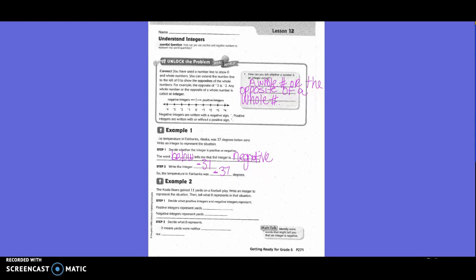Example 2. The koala bear gained 11 yards on a football play. Write an integer to represent the situation, then tell what zero represents. Decide what positive and negative integers represent. Positive integers represent yards gained. Negative integers represent yards lost.